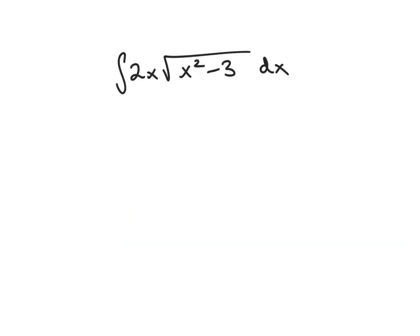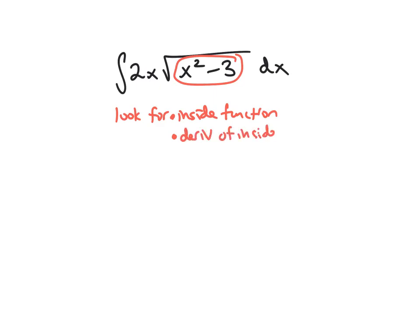Let's say we stumble upon an indefinite integral like this one. The first thing I want you to notice is that this has an inside function, but that doesn't always mean the method of substitution is going to work. You're looking for an inside function, but when you do the chain rule, you don't just get some inside part back — you also have to multiply by the derivative of that inside. So you want to look for the inside function, but you also want to look for the derivative of the inside function showing up as well. In this case, let's call our inside function w, which is x squared minus 3 — it's inside the square root.